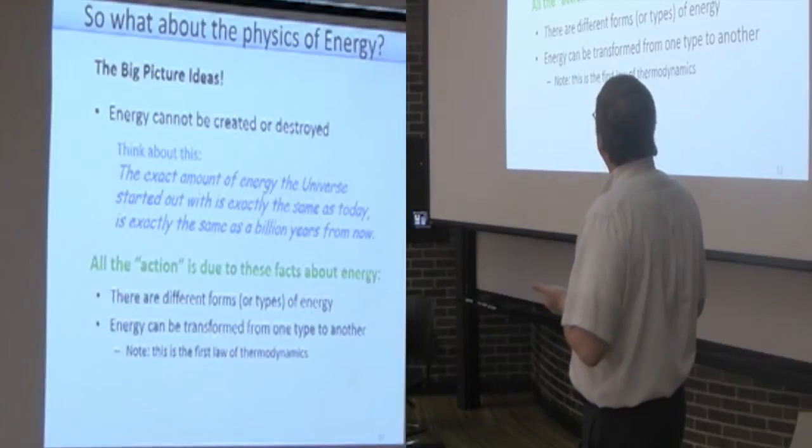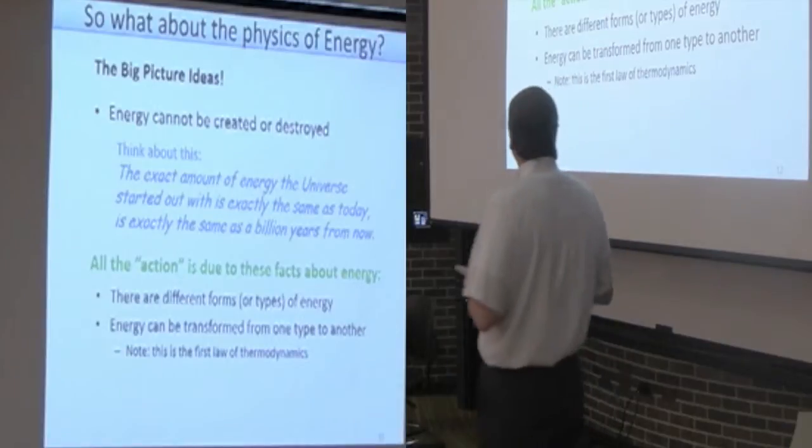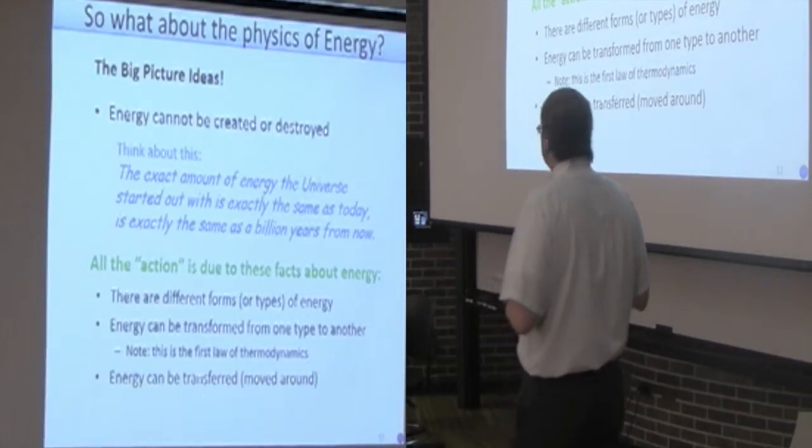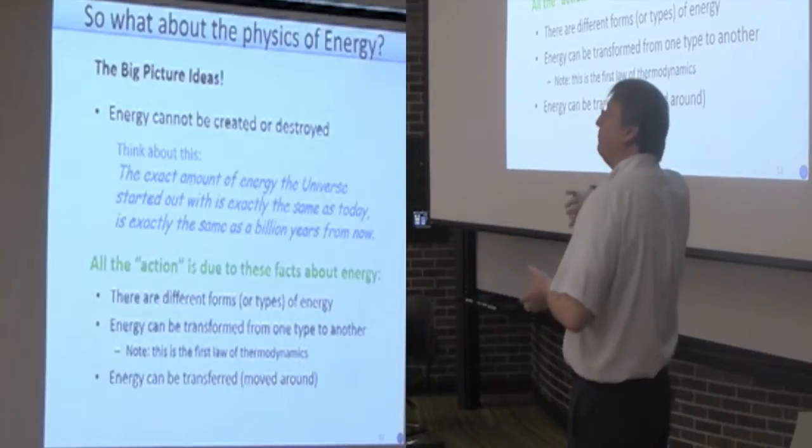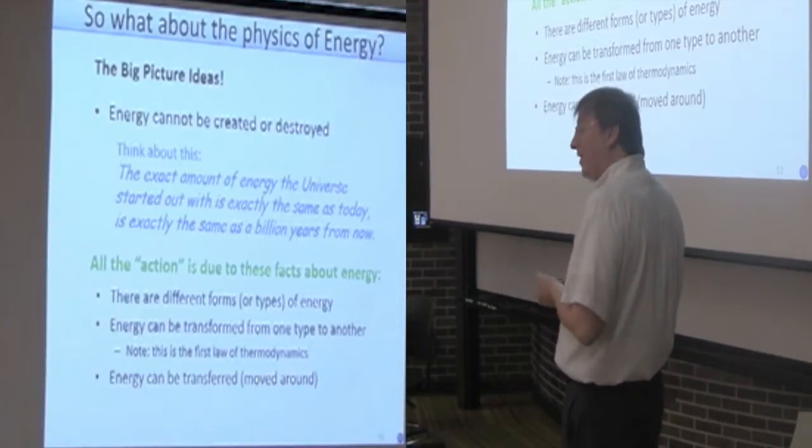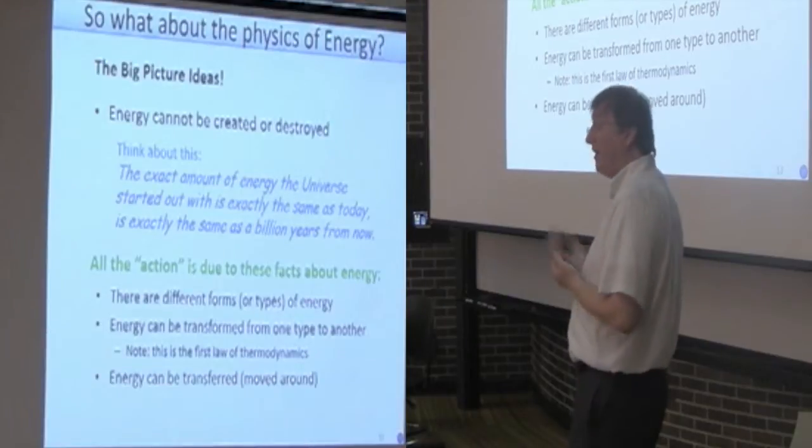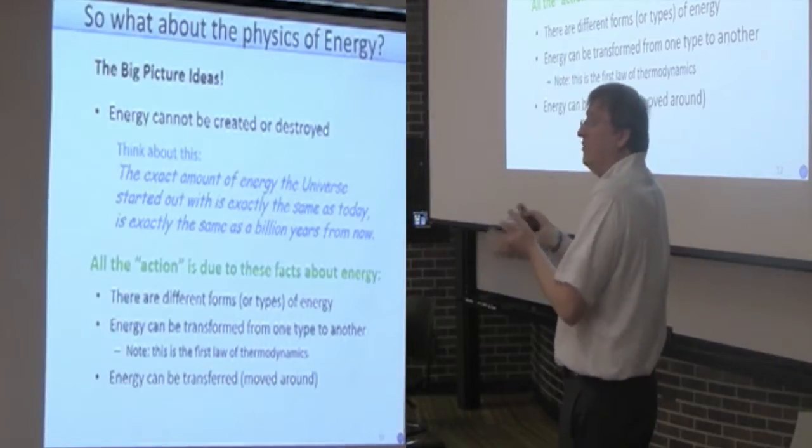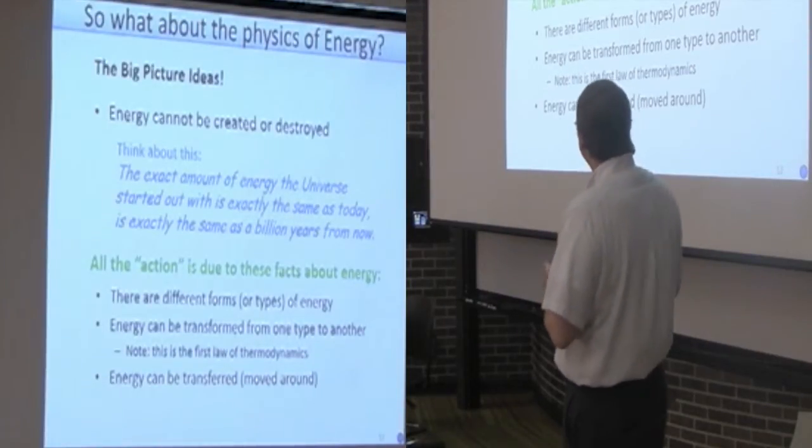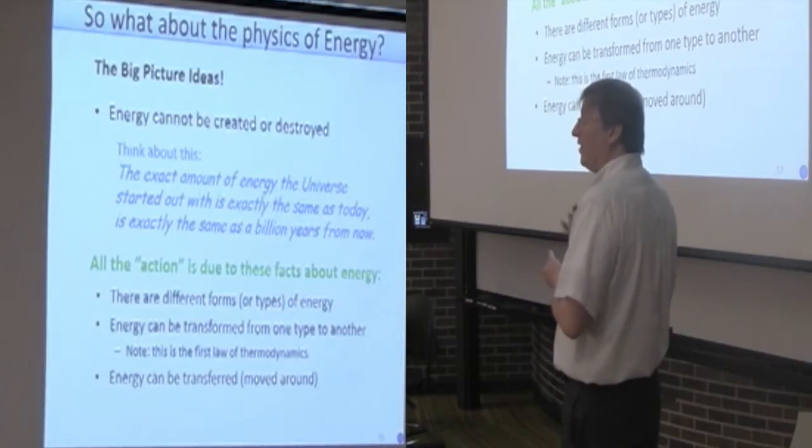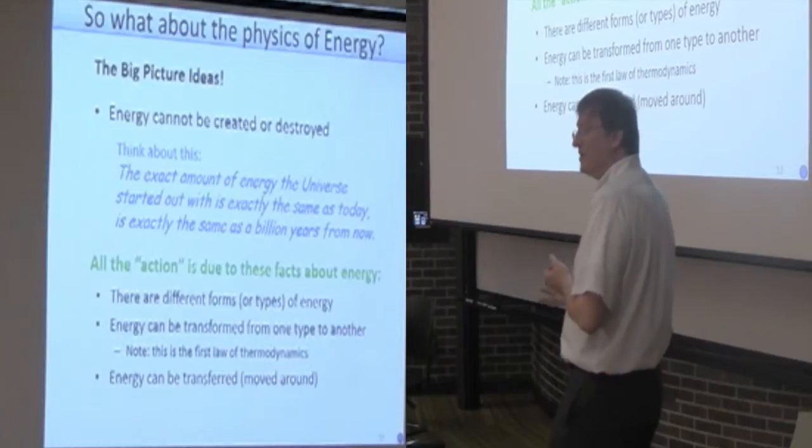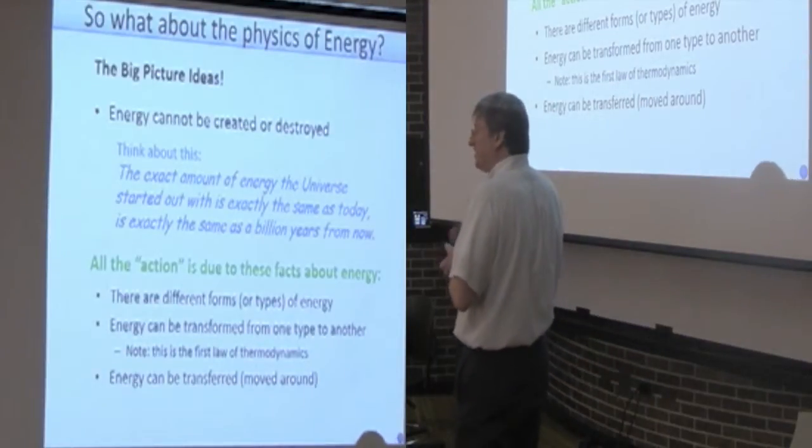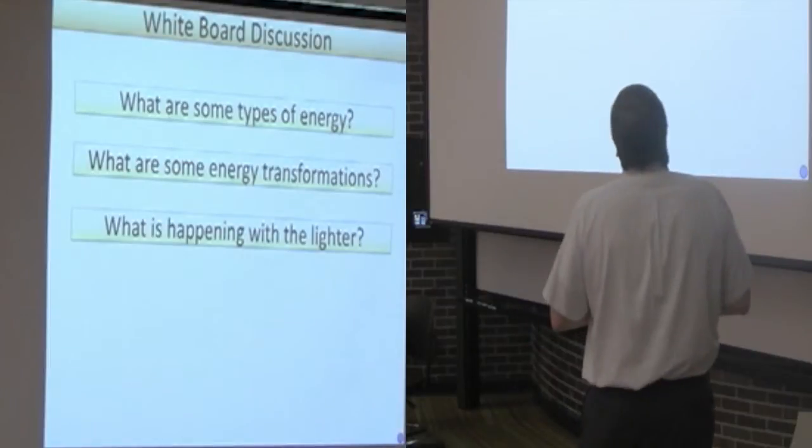Everything, all the action is due to these facts about energy. There's different forms. Energy can be transformed from one type to the other. For example, it's embodied in the first law of thermodynamics. And, it can be transferred and moved around. So, that's all the action. So, we're not ever going to be talking about making new energy in the sense of creating energy out of nothing. And, we're not going to be talking about using up energy in the sense of the physics way of using up energy. What we're going to be talking about is energy of a useful type being available or not. Or, how to generate that energy of the useful type that we want or not in better ways. So, it's maybe somewhat subtle, but I think it's just something good to keep in mind.